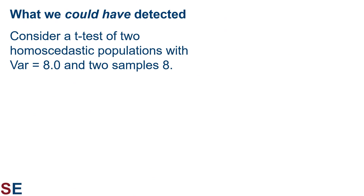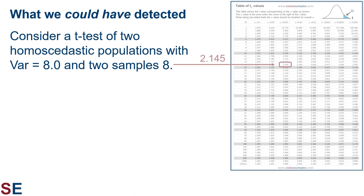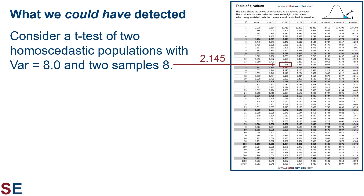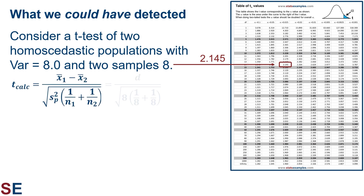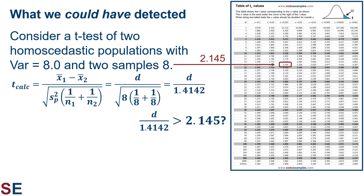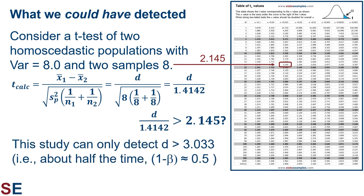Consider a t-test of two populations with variances of 8 and two samples of size 8. For two samples of 8, the degrees of freedom value is 14, giving a t-critical value of 2.145 for an alpha value of 0.025. Using the same t-test equation and substituting the term d to represent the detectable difference, this t-calculated value will give the correct result — rejecting the null hypothesis — when d divided by 1.4142 is larger than 2.145. Cross-multiplying tells us that this study can only detect differences when d is larger than 3.033. If the true difference is 3.033, our t-test will return a significant result half the time; the other half, sampling error will result in a t-calculated value slightly less and we won't reject our null hypothesis.